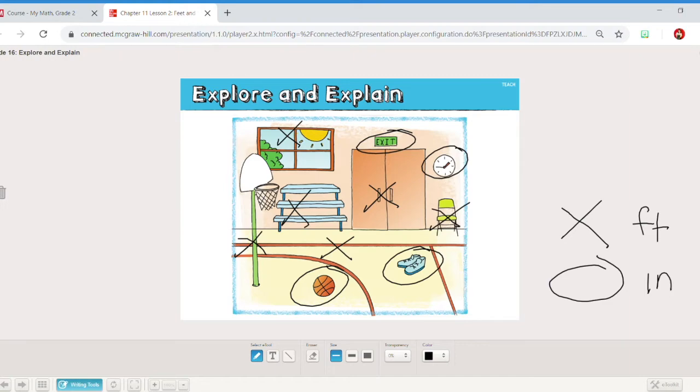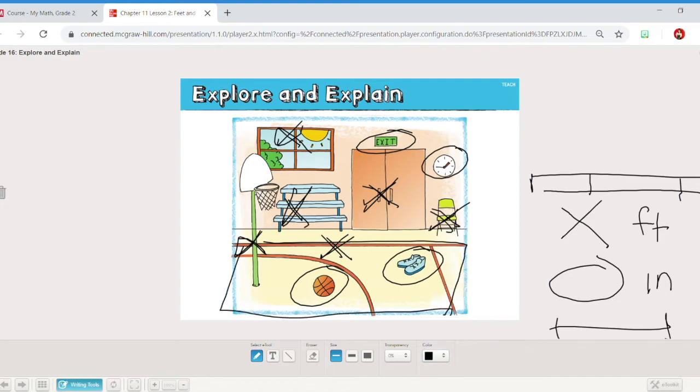I went ahead and said I could measure shoes, the basketball, the clock, the exit sign in inches. I feel like those things would make sense to use a ruler for. For feet, I would need a yardstick to measure, which includes three feet. Because they're larger, I think the basketball hoop, the bleachers, the windows, the door, the chair, and even the basketball court itself would need yardsticks to measure. Did you get the same things?